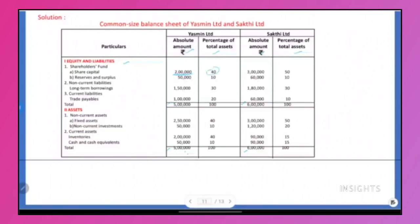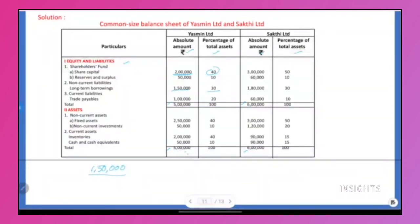Assets 5 lakhs and Liabilities 5 lakhs; Assets 6 lakhs and Liabilities 6 lakhs. You can take either Assets or Liabilities. One item is the numerator; total Assets or Liabilities is the denominator × 100. For the 3rd item: 1 lakh 50,000 / 5 lakhs × 100. 3's are 15 and 1 zero, so 30%. Add the percentages: 40 plus 10 = 50, 50 plus 50 = 100.